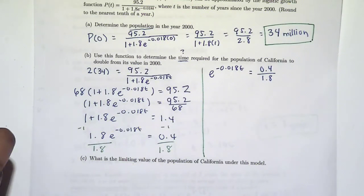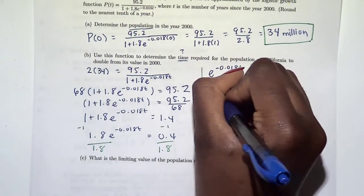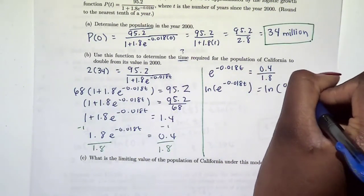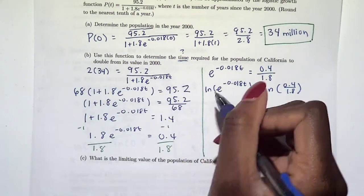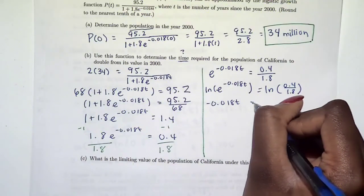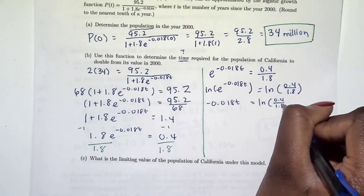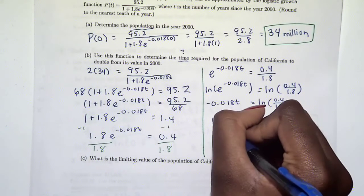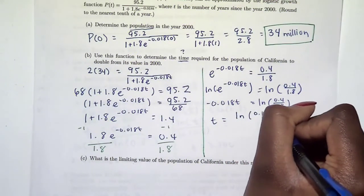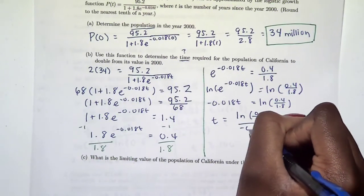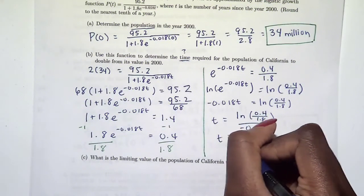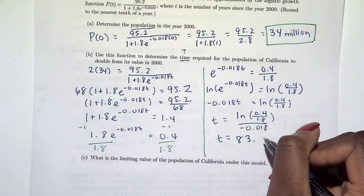And then finally I can divide by that negative 0.018. So we put this in our calculator and we get that time is 83.6 years.